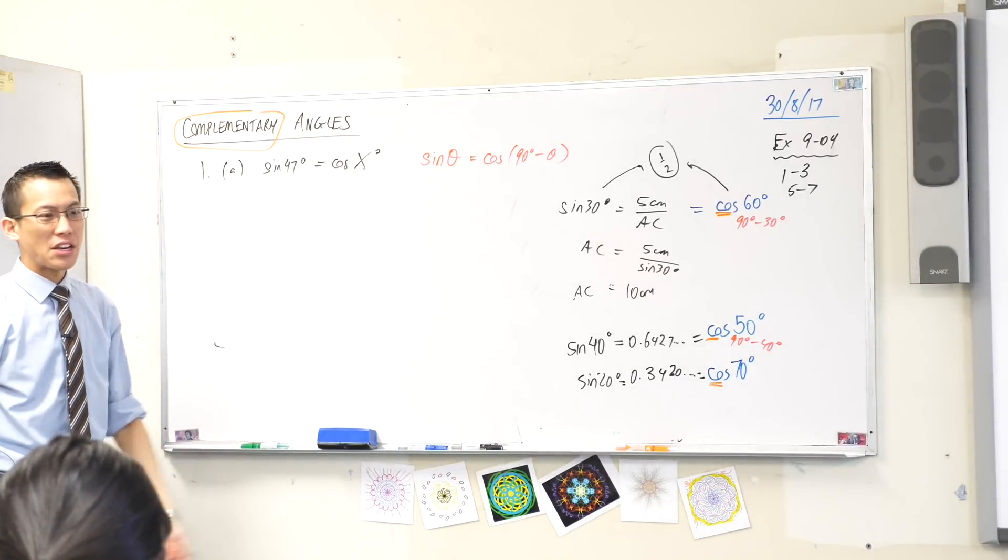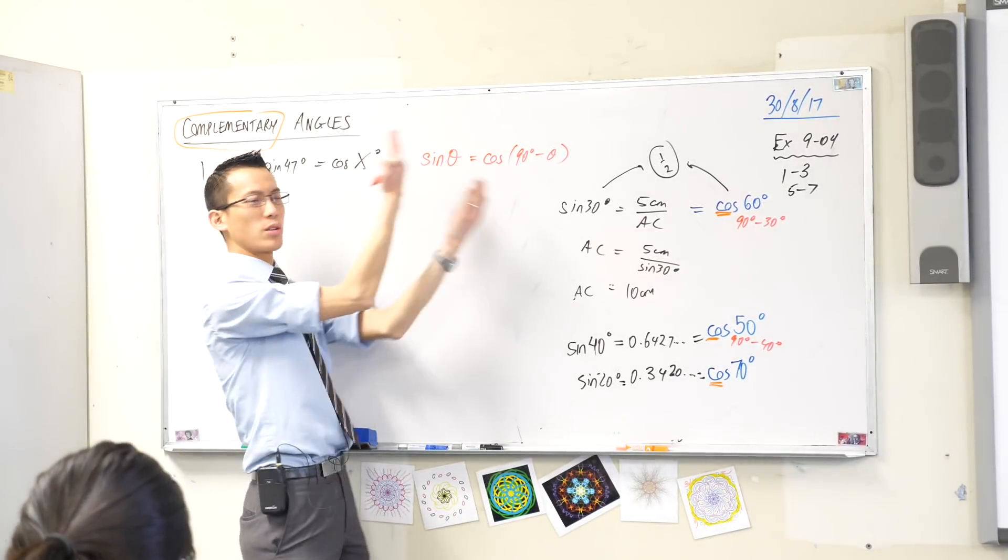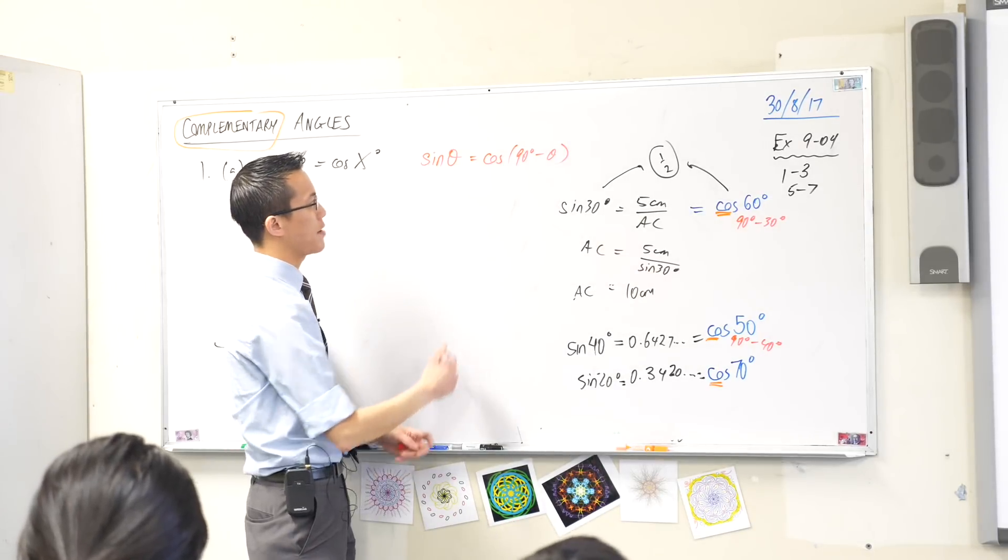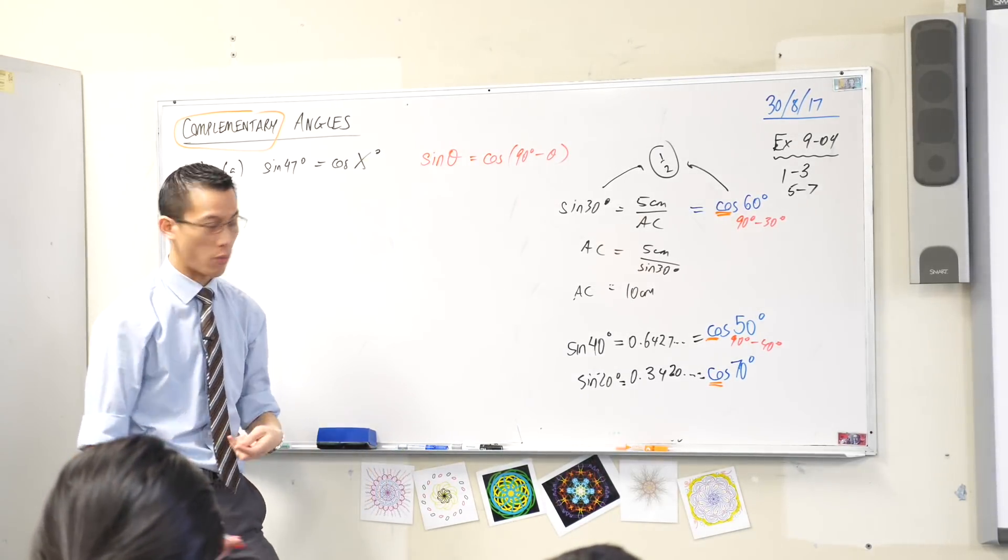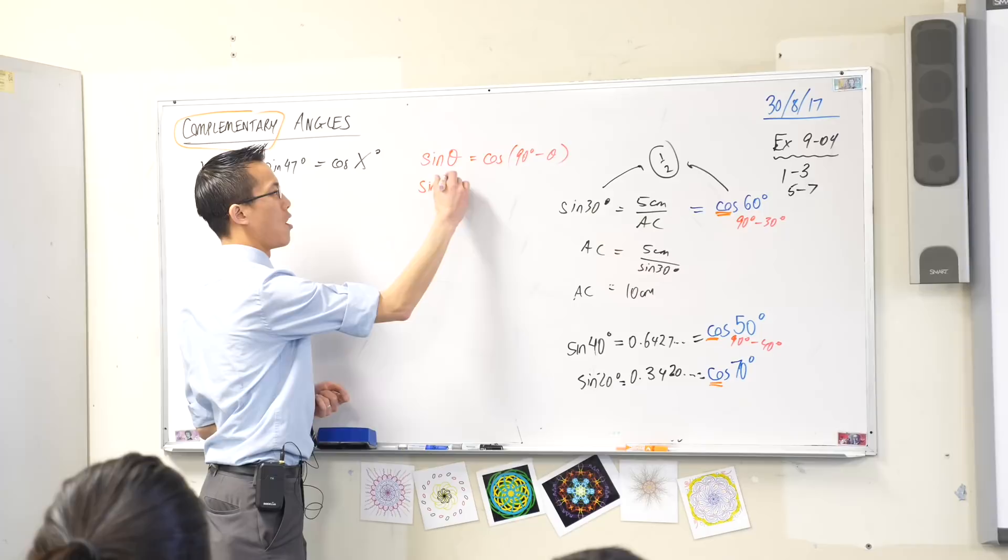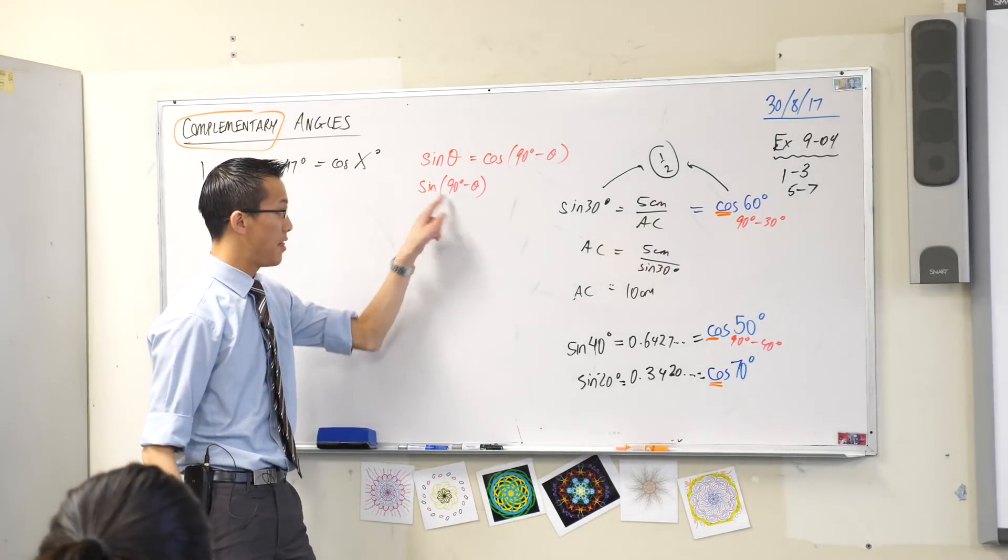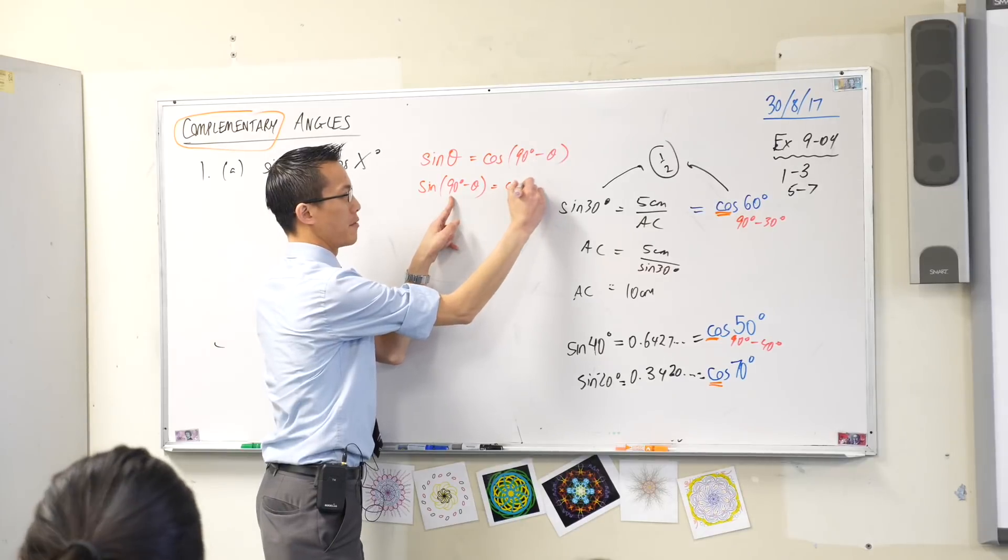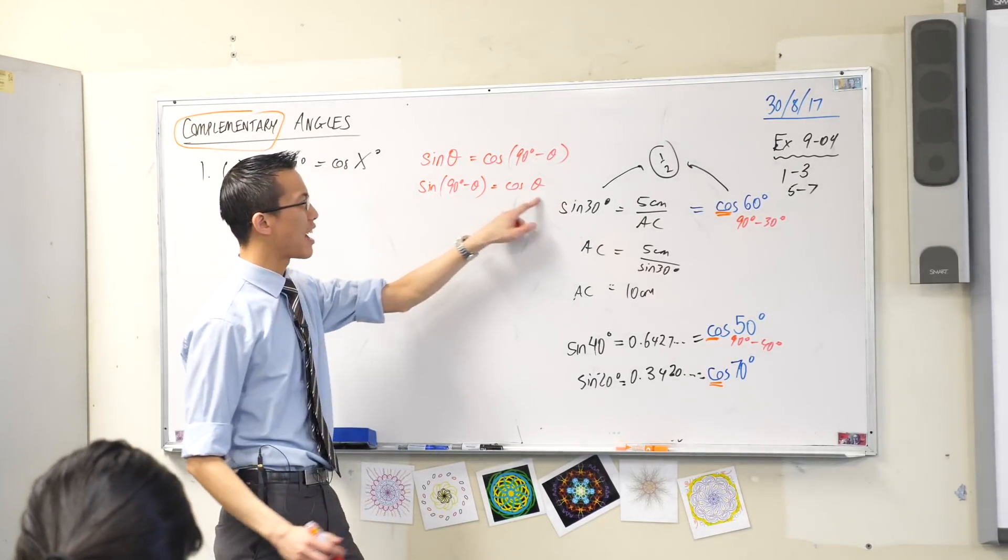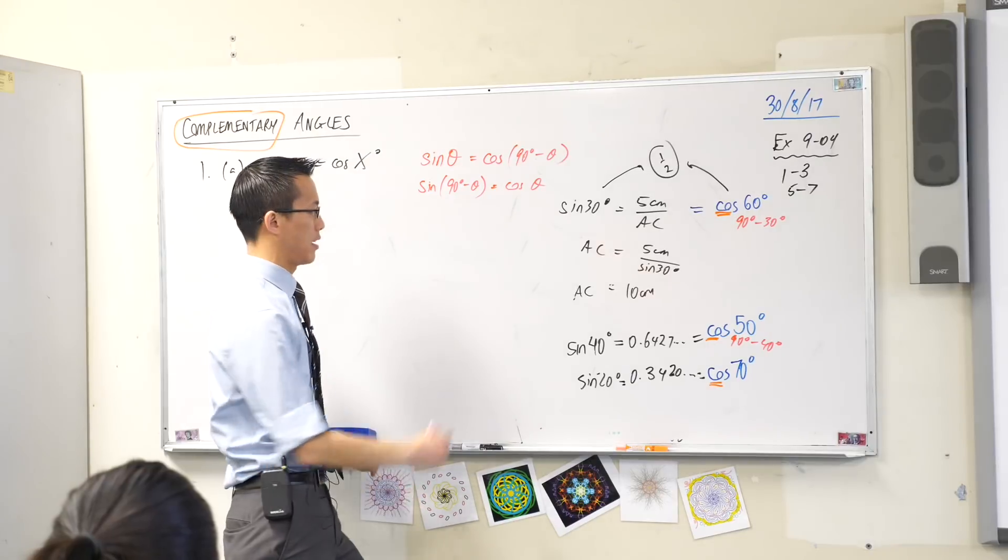Now because this is what we would call a symmetrical relationship, you can also write it the other way around. Sine of 90 degrees minus theta, this will be the complement of theta. You see that? So this is just like two ways of looking at the same thing.